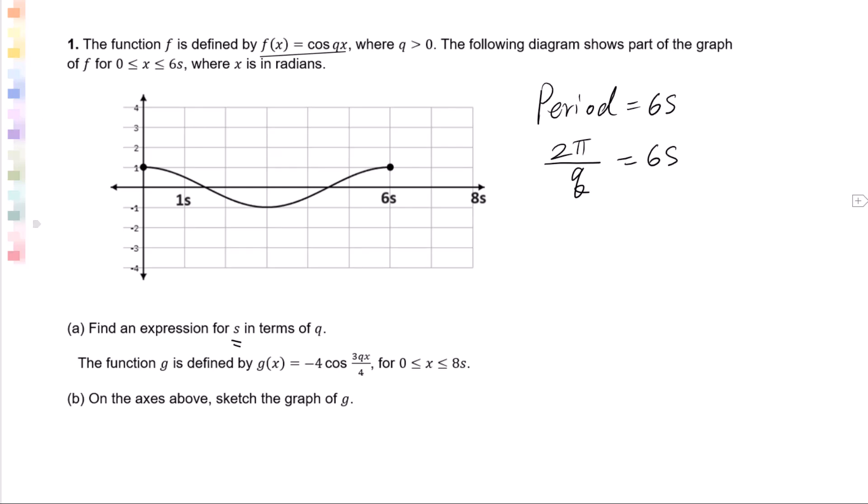Now we will solve for s by dividing both sides by 6. The denominator drops down: 2π/(6q). Then reduce: s = π/(3q). The function g is defined by g(x) = -4cos(3qx/4).